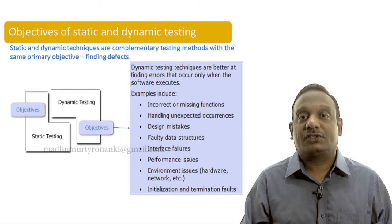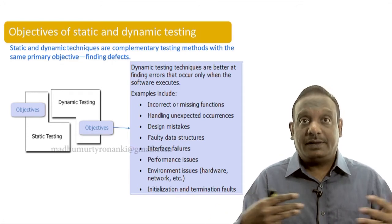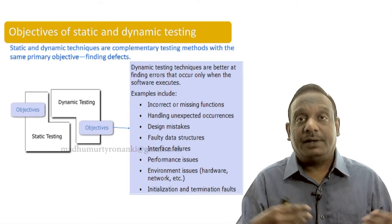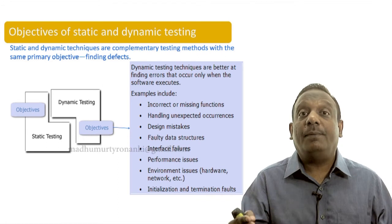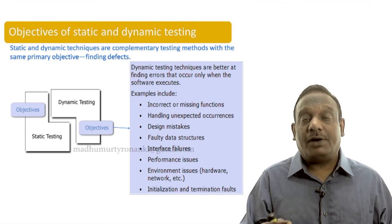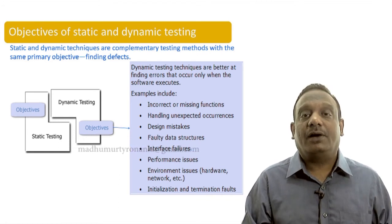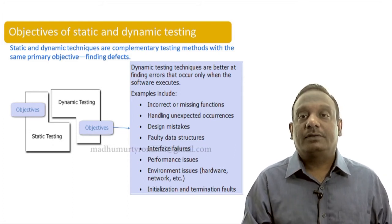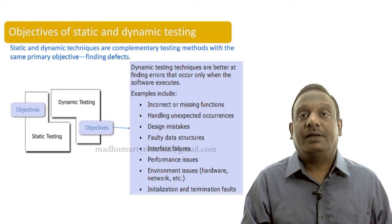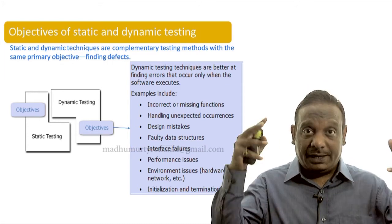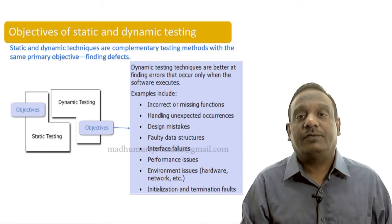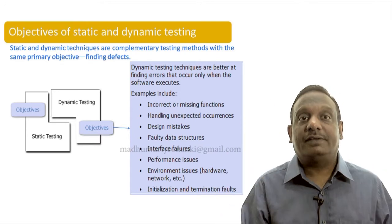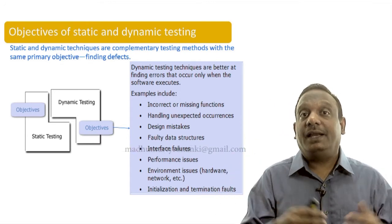Faulty data structures, interface failures, the interconnectedness of various programs. Whenever it is failing, it can be found during the execution time. Performance issues, whether the response time is okay or not, only by executing we can find them. The environment issues, software, hardware, networks, all these things can be found only by deploying the software and executing the software. And initialization and termination faults. These are the type of faults that can be found using dynamic testing.